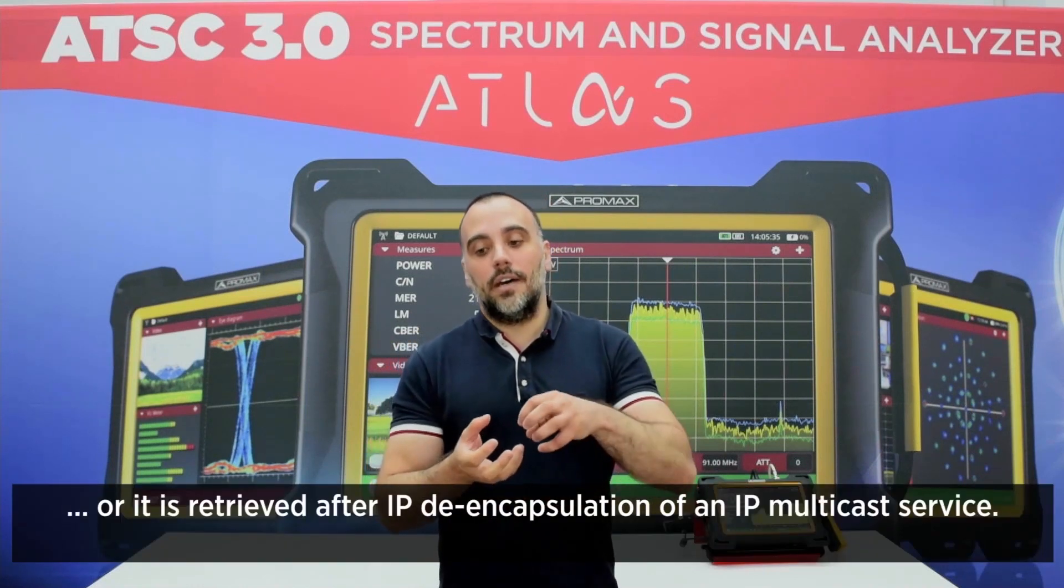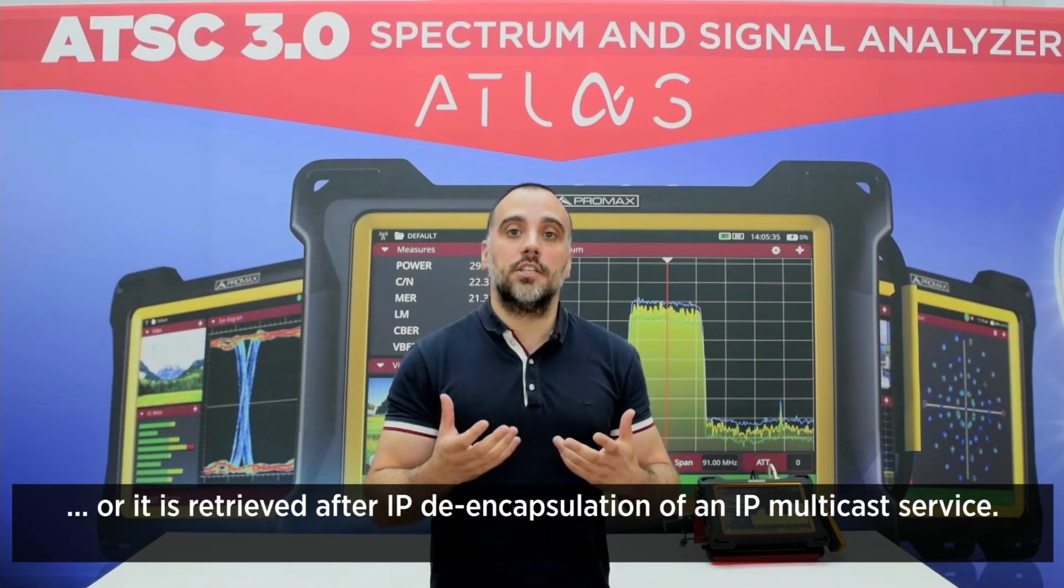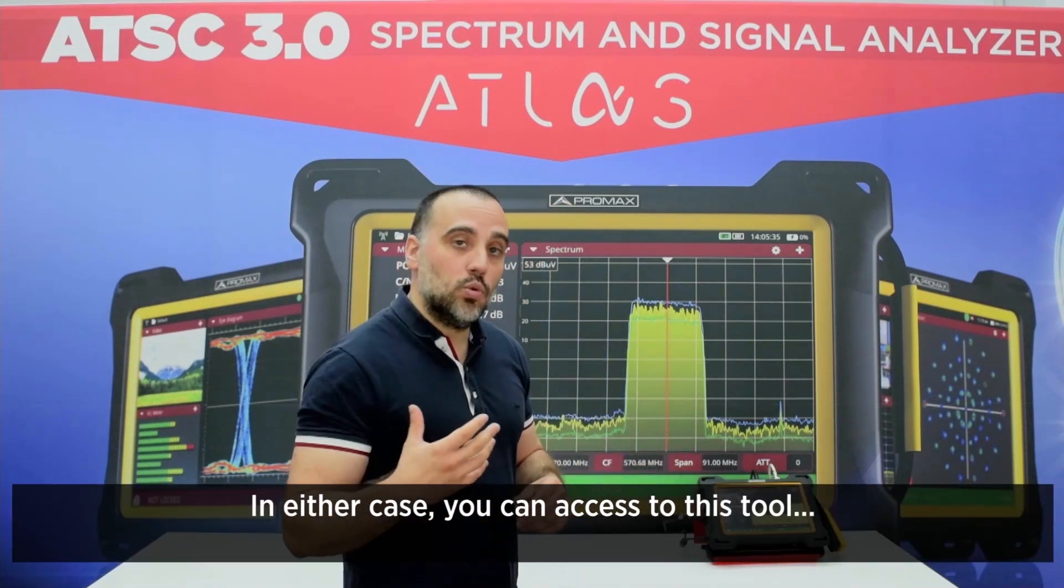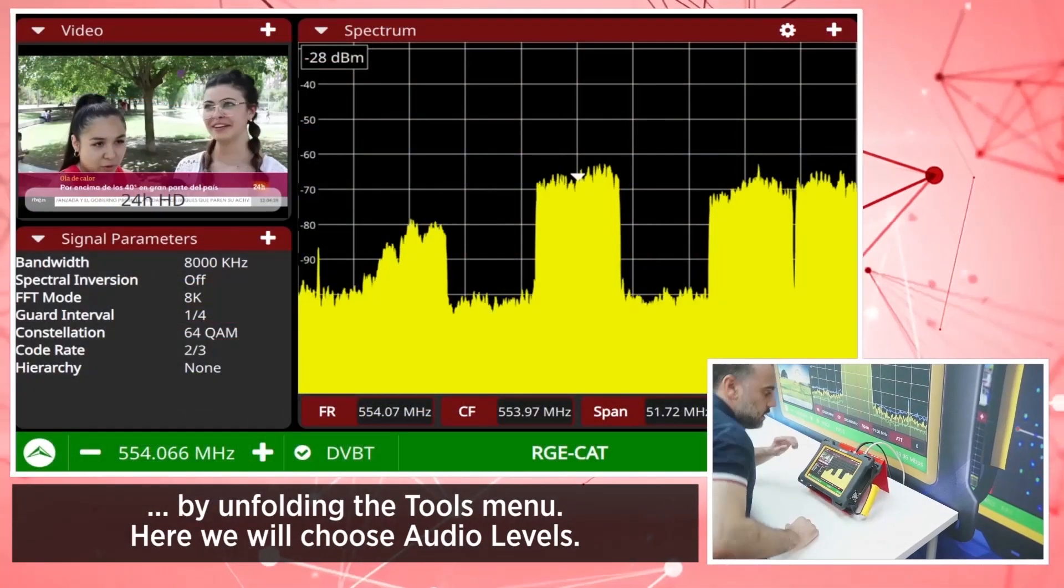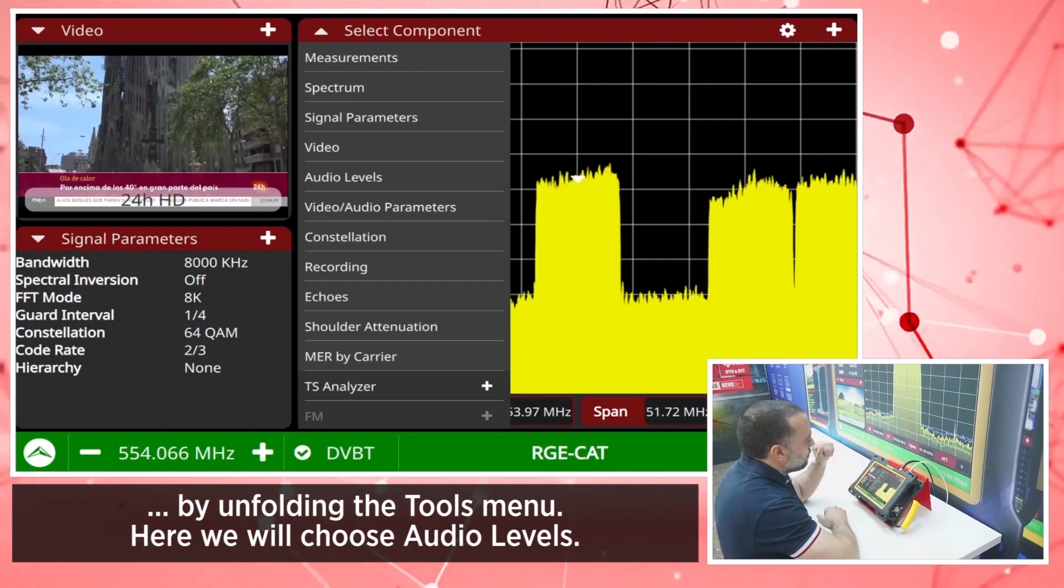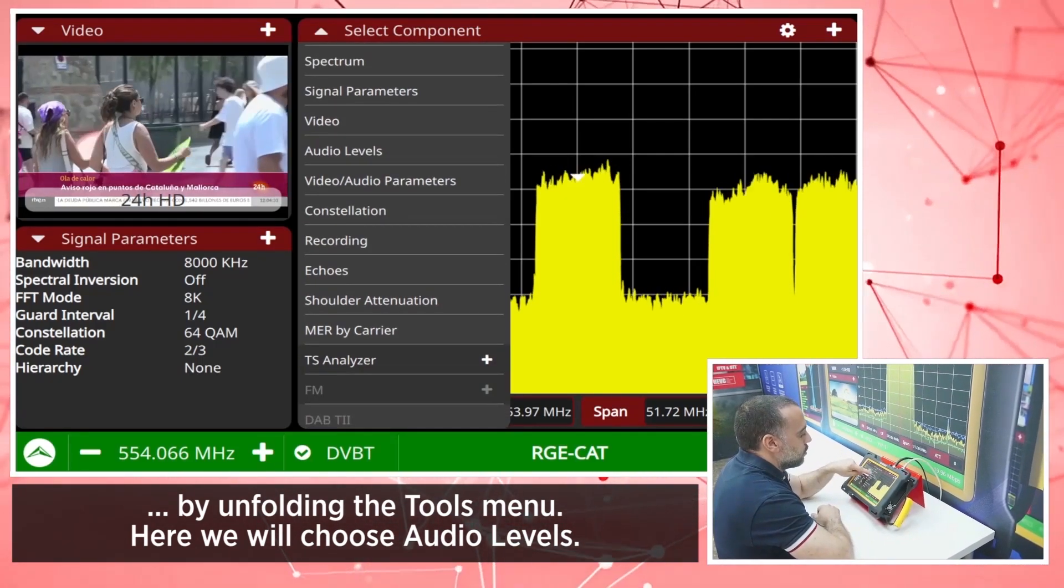It can also be retrieved after IP encapsulation of an IP multicast service. In any case, you can access this tool by unfolding the tools menu and choosing Audio Levels.